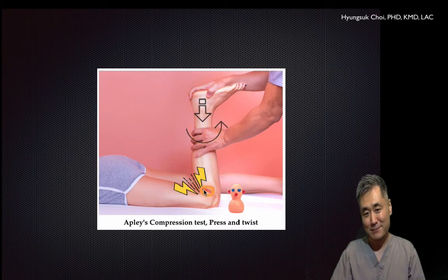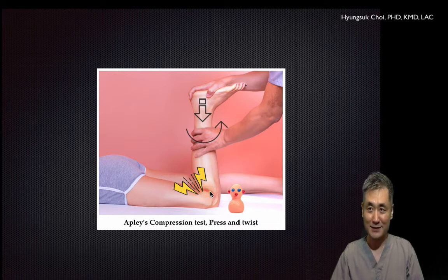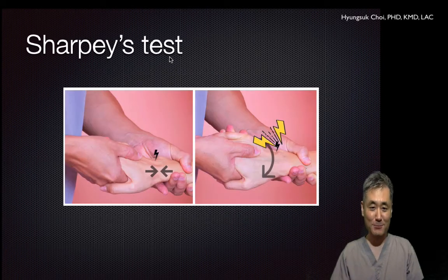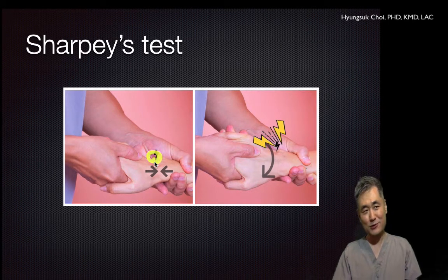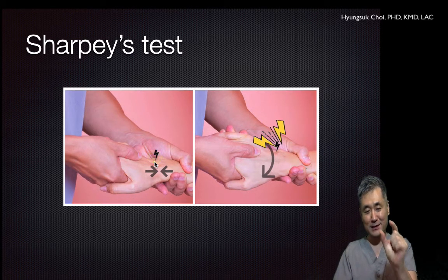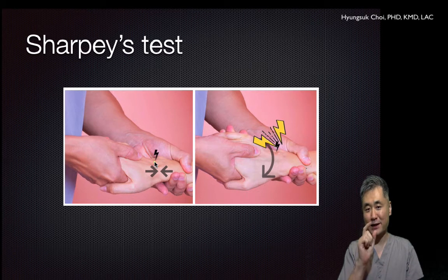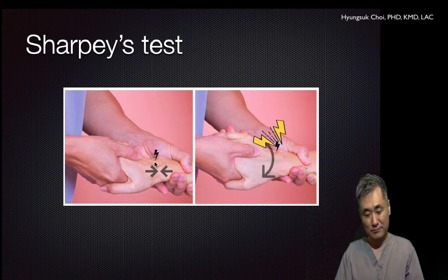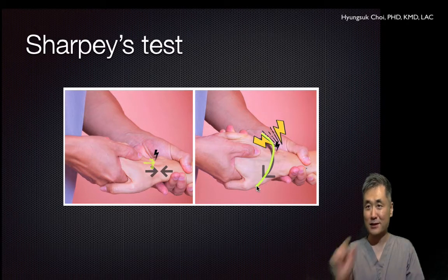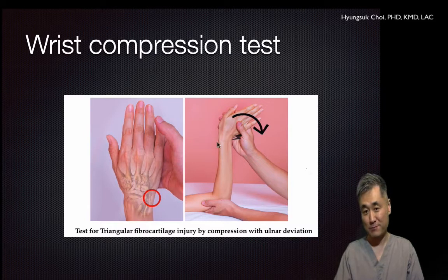For a meniscus tear, press and twist — just like a bottle cap. Press this way and twist, squeezing the meniscus inside and irritating the injury. For the TFCC — the pinky-side cartilage structure — there is a small cartilage between two bones that can tear just like a meniscus. You test it by compressing and twisting, just like a bottle cap. This is called the compression test, and there is also the sharpest test for TFCC.